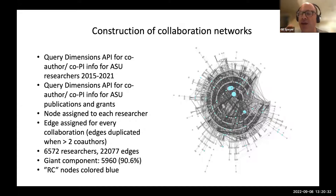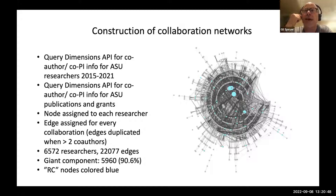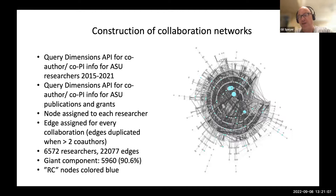There are caveats to visualizing this data. A lot of edges are duplicated because if you have three authors co-authoring a paper, there will be redundant edges — an edge drawn between every pair. So for one publication with three authors, there are three edges. As you might imagine, it's N times N minus one over two — so if you have 10 co-authors, you're going to have 45 edges representing that one publication.